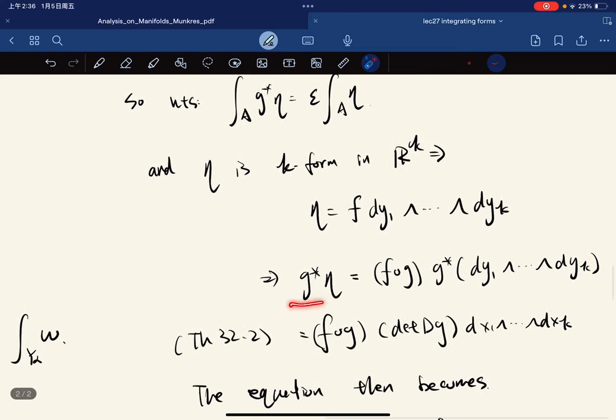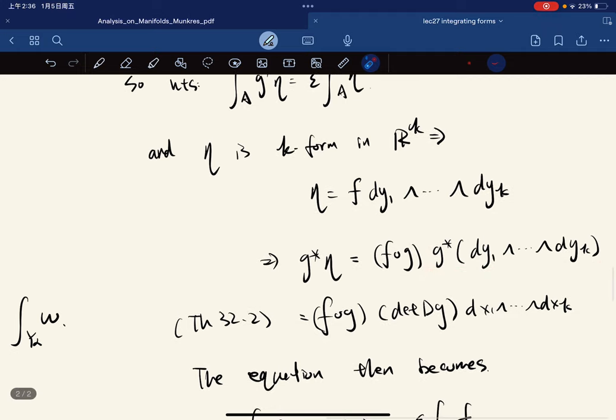Then G star of nita, which is G star of F, and with G star of this. Now theorem 32.2, which is the formula for calculating those. We got it.